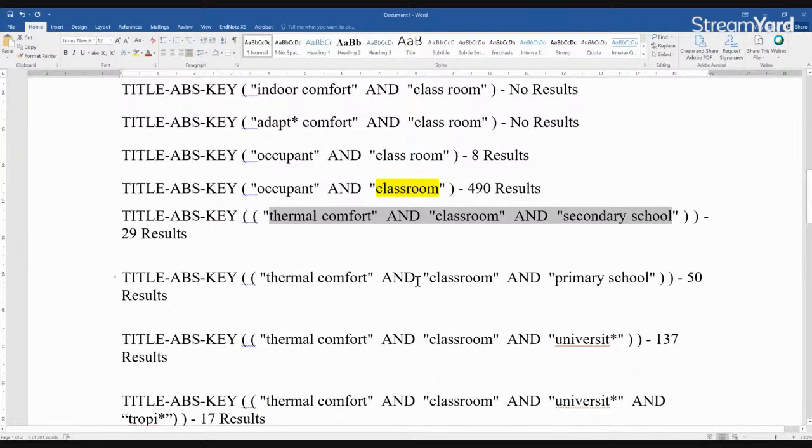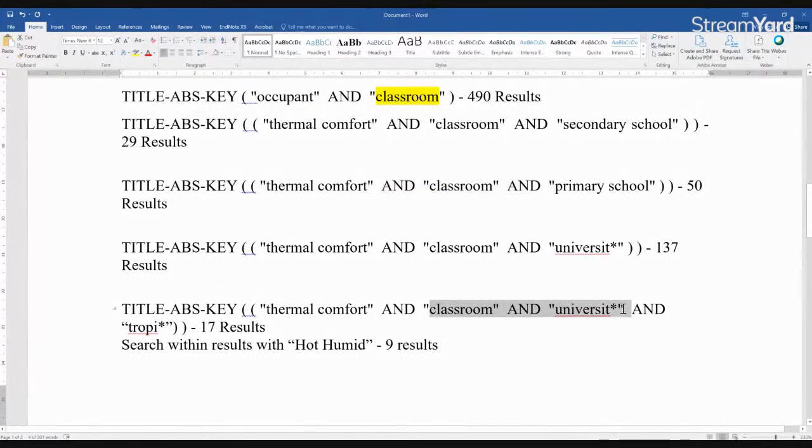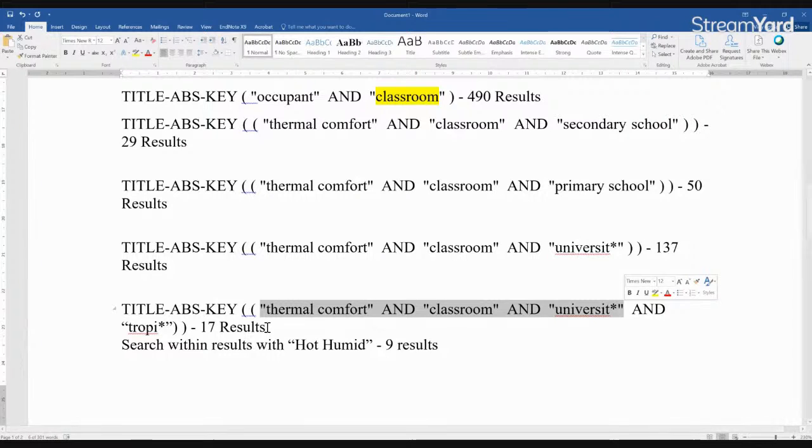So this could be one section. This could be another section. I could take this one. So first I could just talk about thermal comfort in university classrooms. Because I have 17 results. Oh, sorry, not 17. I had 137 results, but then I can go a little bit more specific. I can say, what about tropical environments? I have 17 results. So you can gradually refine your search using these ideas.